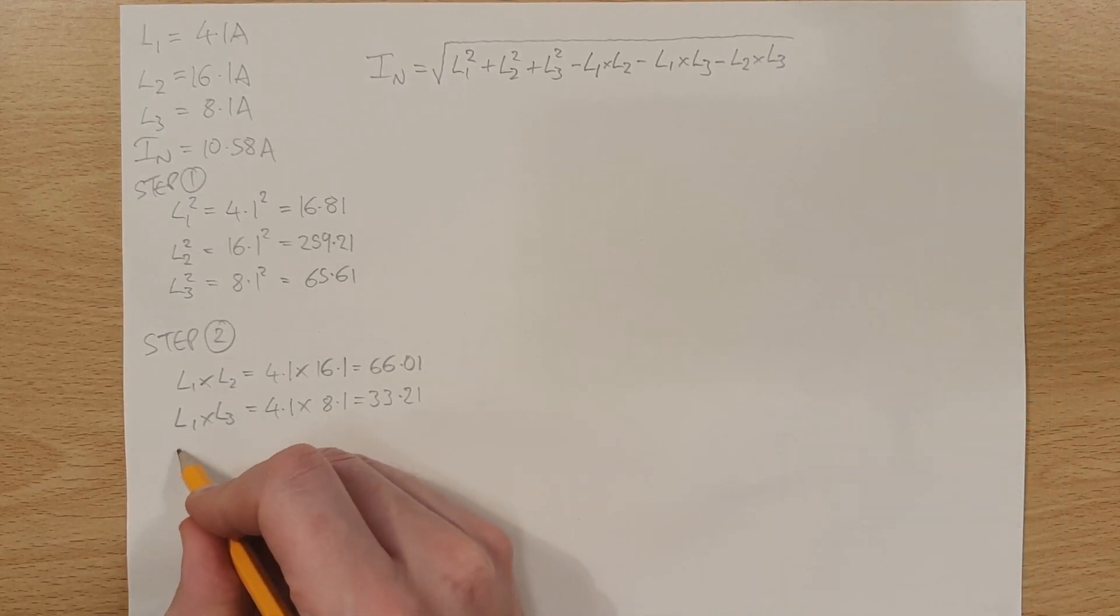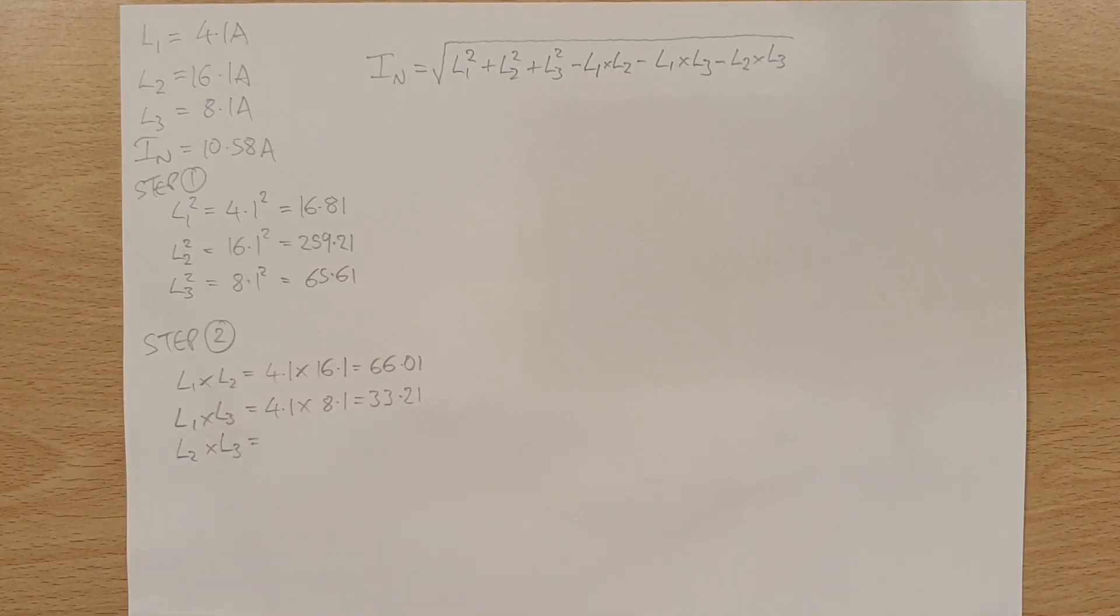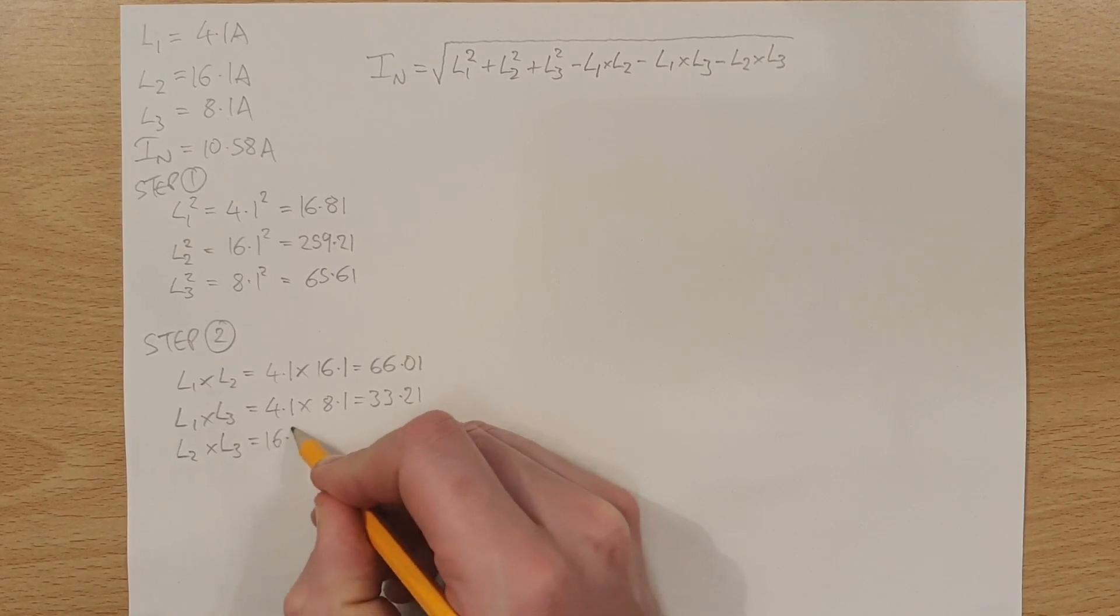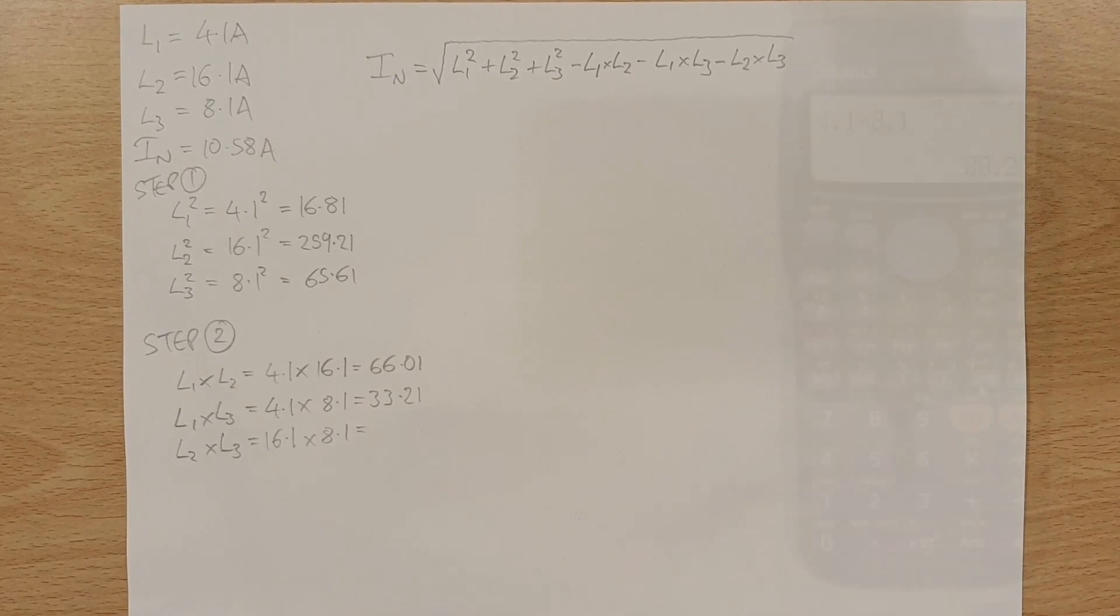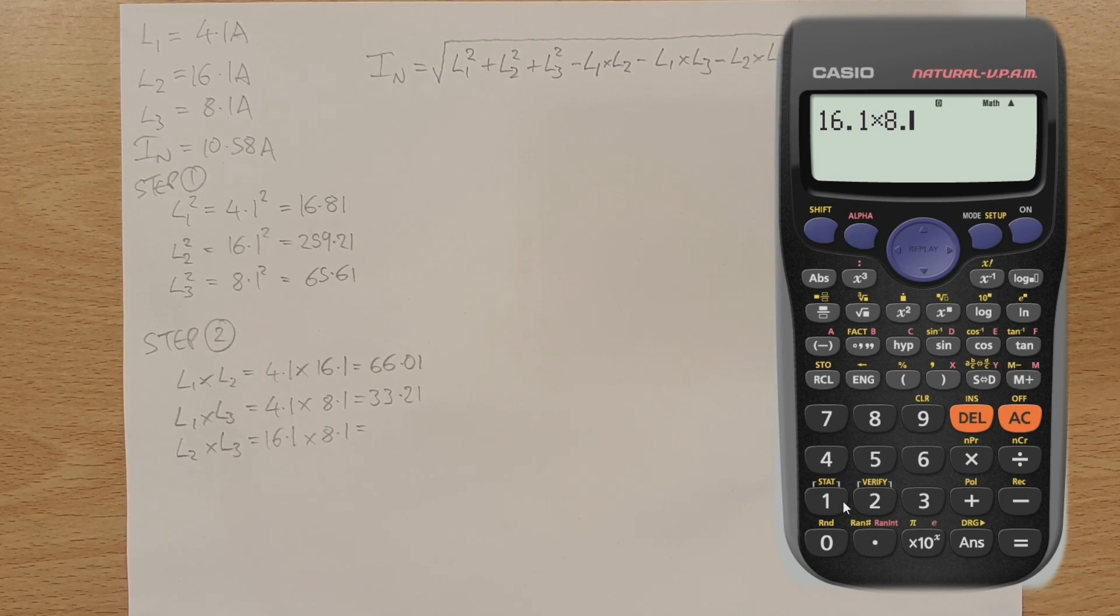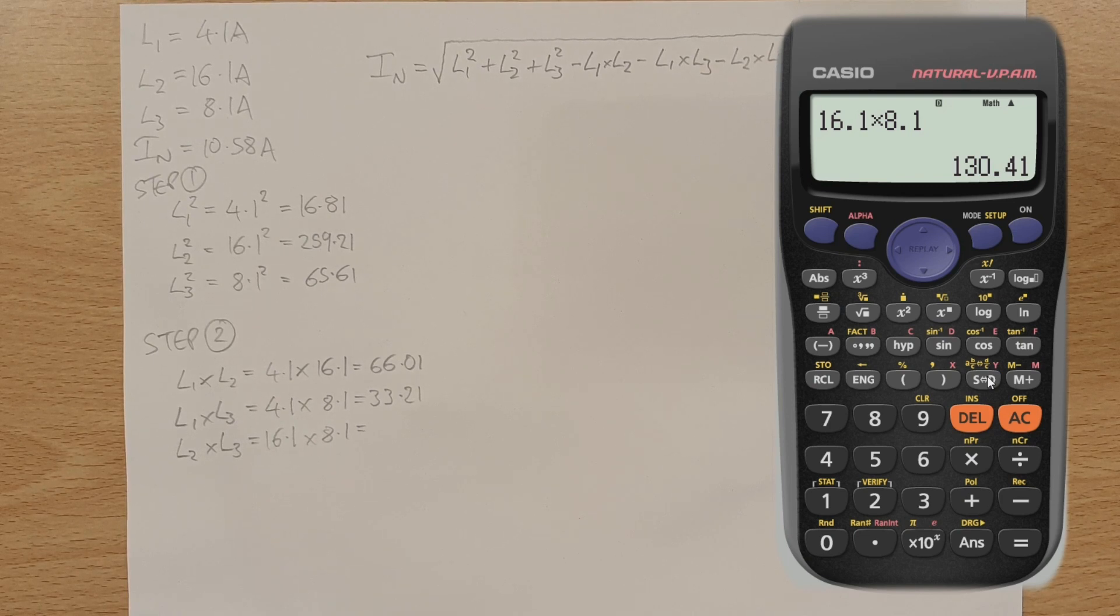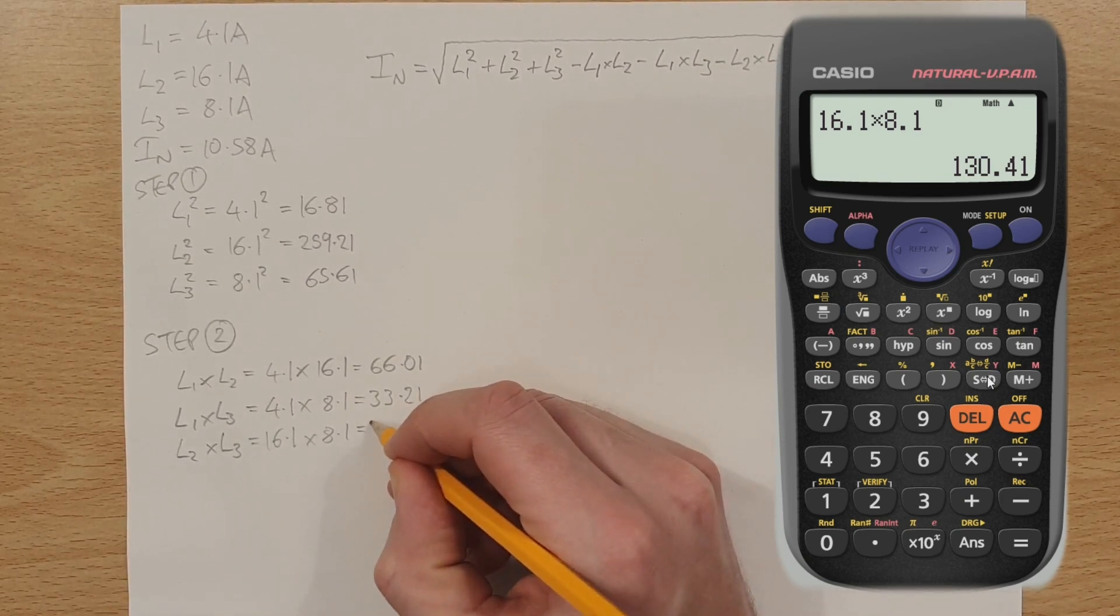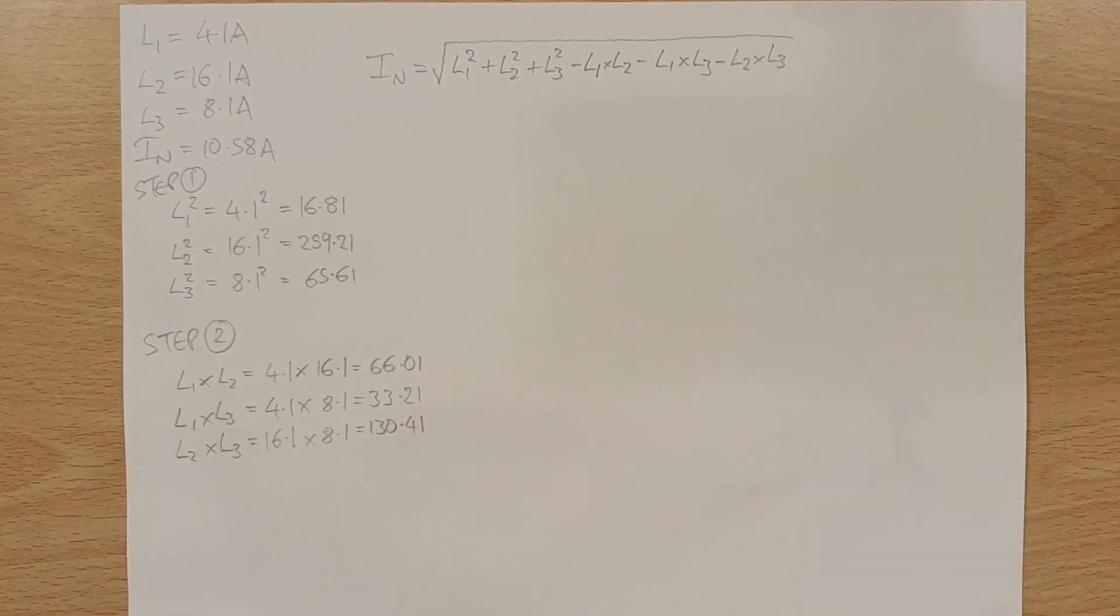And then we just do the final part, which is L2 times by L3. So the only combination we've not done there. So that's going to come out now at 16.1 multiplied by 8.1. And when we do that, 16.1 multiplied by 8.1, we come out with this value here, 130.41. So that's 130.41. So that's great.